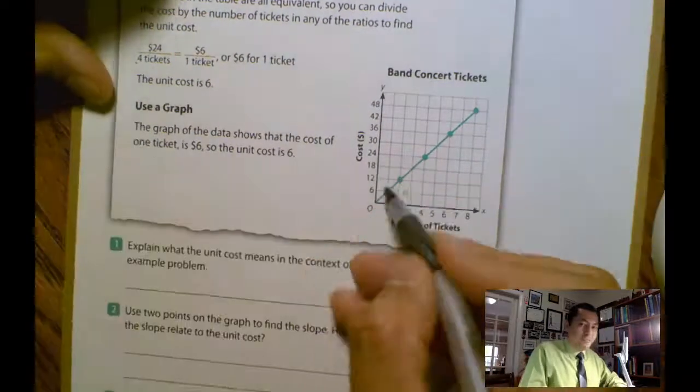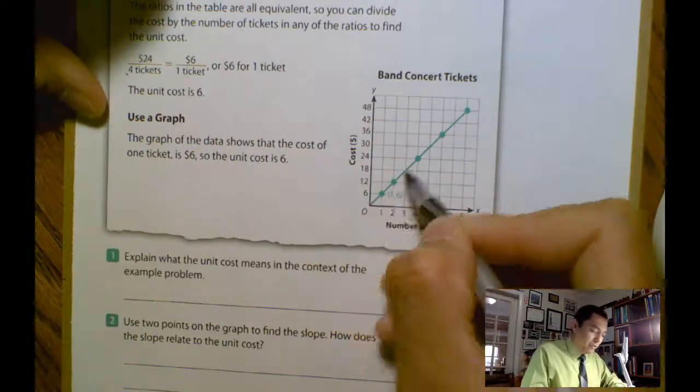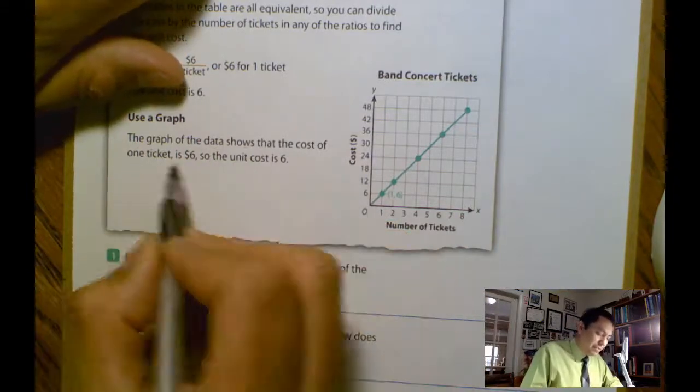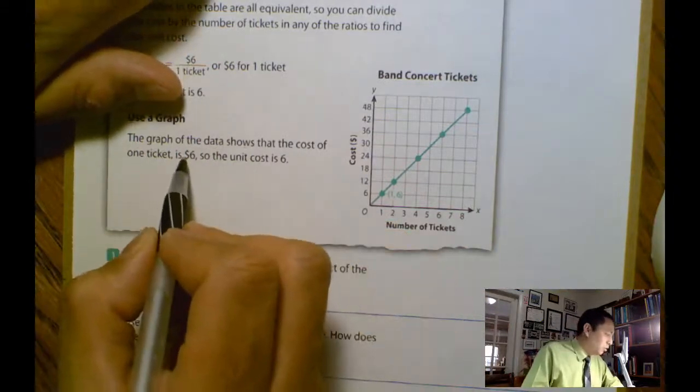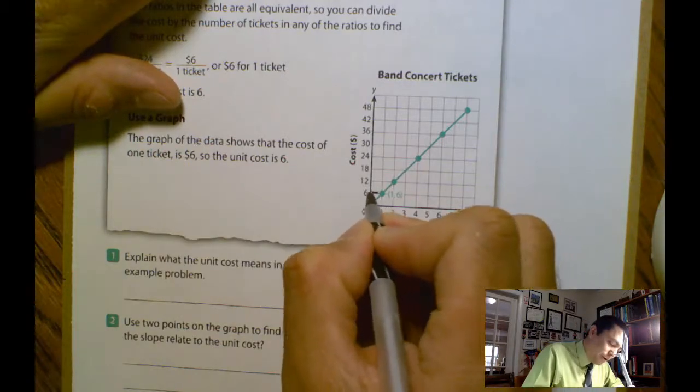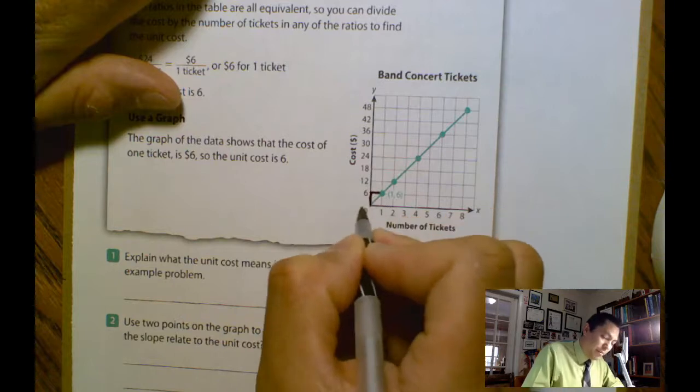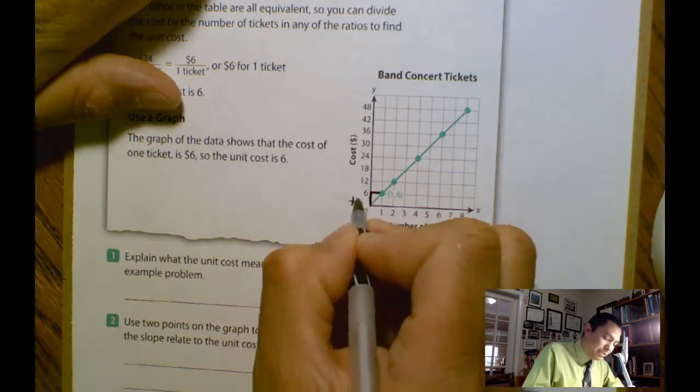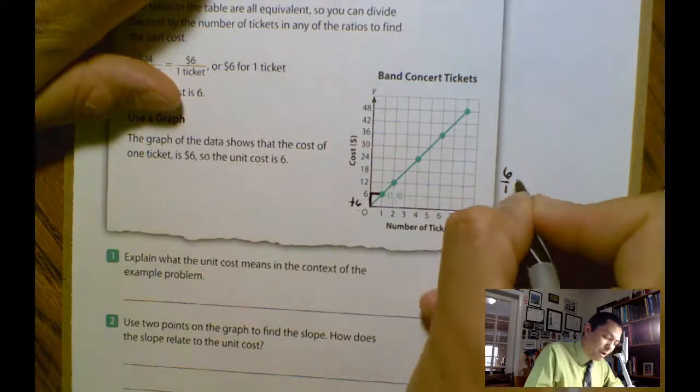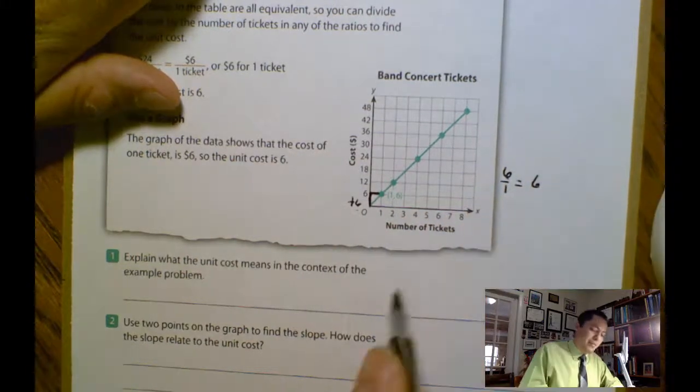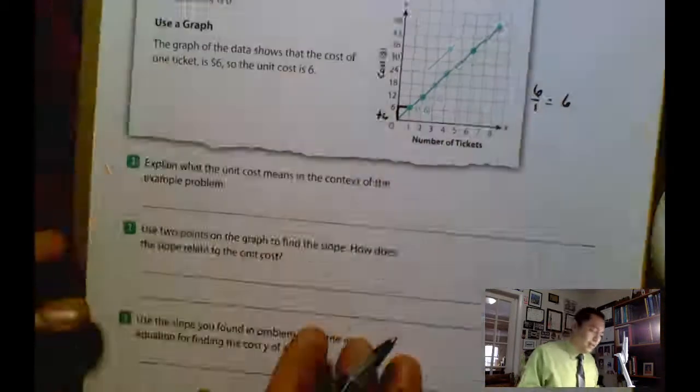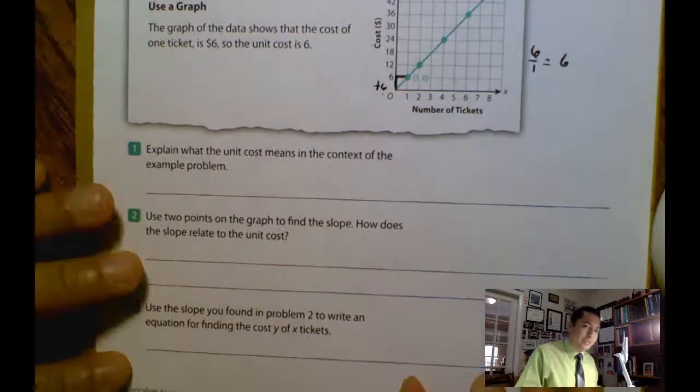Now we use the graph. So you graph those points and you're going to have a linear function. The graph of the data shows that the cost of the ticket is $6. How do I figure out those ones? See, rise over run. Rise over run. How many units we went up? 6. How many units we went to the right? 1. So it's 6 over 1 equals 6, which is the cost per ticket.